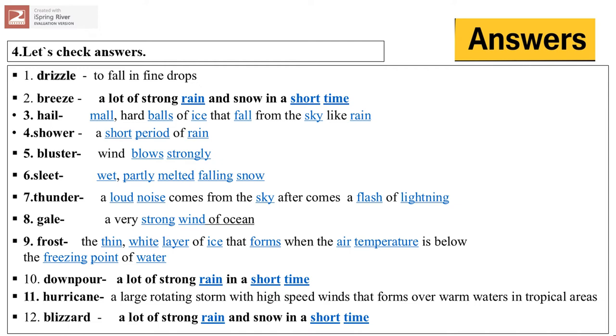Number seven, tundra: a loud noise comes from the sky after comes a flash of lightning. Number eight, gale: a very strong wind of ocean. Number nine, frost: the thin white layer of ice that forms when the air temperatures below the freezing point of water. Number ten, downpour: a lot of strong rain in a short time. Number eleven, hurricane: a large rotating storm with high-speed winds that forms over warm waters in tropical areas. Number twelve, blizzard: a lot of strong rain and snow in a short time. Okay, you have already complete this one.